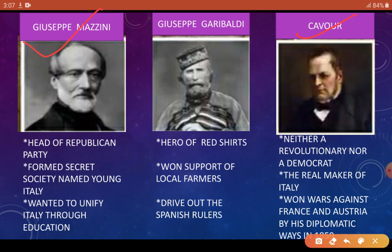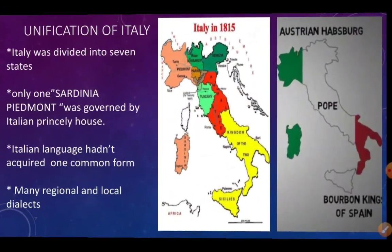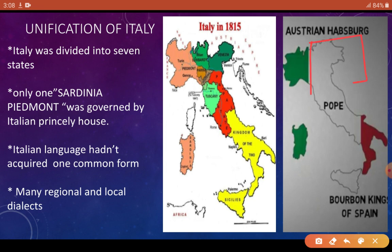When the responsibility came on Victor Emanuel II's shoulders, he gave the command to his chief minister Cavour — to go and by hook or by crook, unify Italy. Cavour was neither a revolutionary nor a democrat, but he was the real maker of Italy. He spoke French very beautifully and was a very diplomatic person. Due to his diplomatic policies, he succeeded in defeating the Austrian Empire, and after that, the whole northern area came under Victor Emanuel II's control.